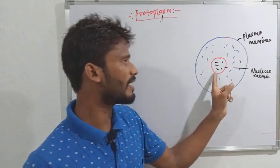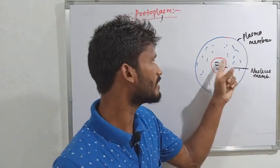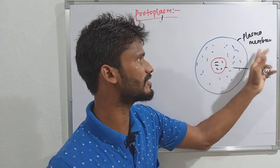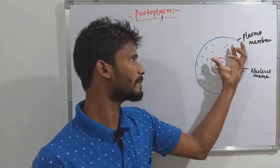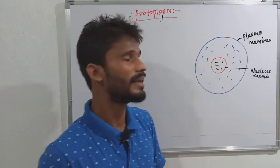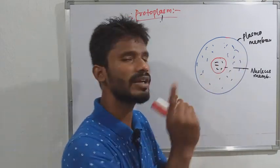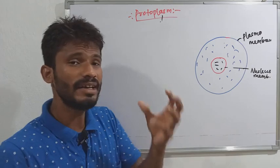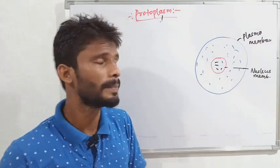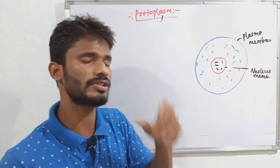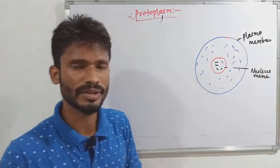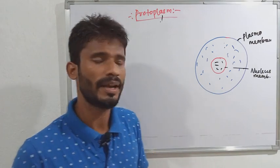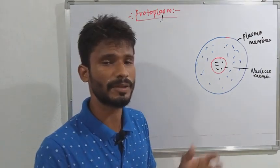The red surface denotes the nucleus membrane, and the blue surface denotes the plasma membrane. All of the protoplasm is placed inside the plasma membrane as well as the nucleus membrane, along with all the cell organelles — such as mitochondria, Golgi apparatus, and endoplasmic reticulum.